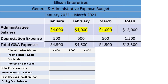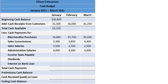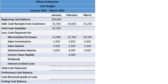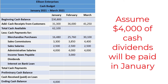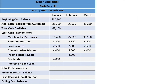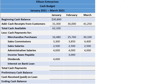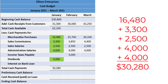Note that the depreciation expense is a non-cash expense, so it will not show up on the cash budget. Next we have the income taxes payable. If we look to the balance sheet, we see there is a $3,000 balance, and it is labeled as being due on February 28th, 2021, so we must include that in the cash payment column for February. Next we have the dividends, which don't show up in any of the other budgets. The cash dividends are $4,000 and are to be paid in January. There will be no interest on a bank loan for January since there is no existing loan. There may be a bank loan in February or March, which we will be determining momentarily. The total cash payments for January come to $30,280.